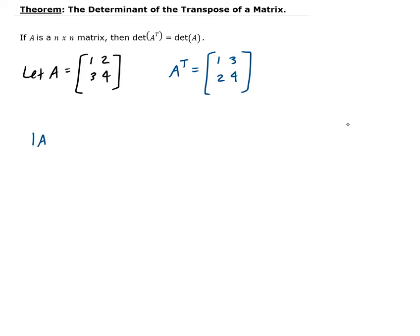So the determinant of A here is going to be, again, 4 minus 6. That's going to be negative 2.